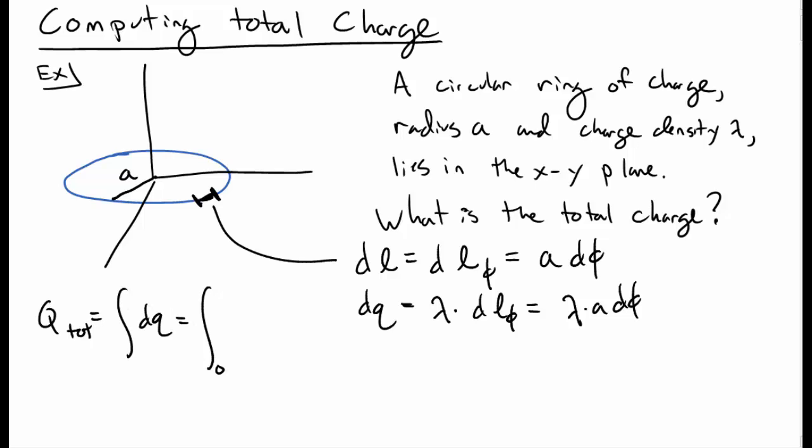The total charge is certainly the integral over dq, and so that's an integral of lambda A d phi from 0 to 2 pi, and that integral is nice and easy to do, and it's just 2 pi A times lambda.